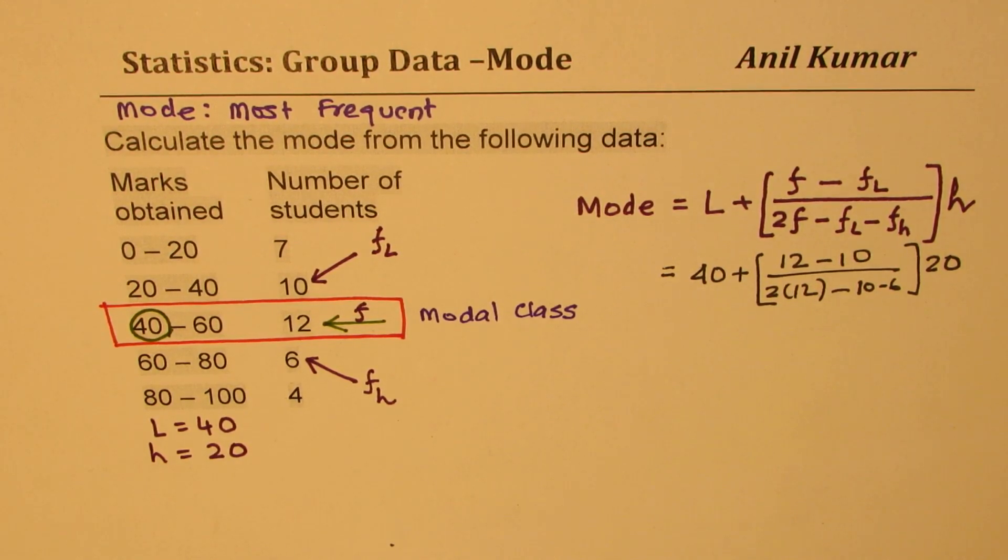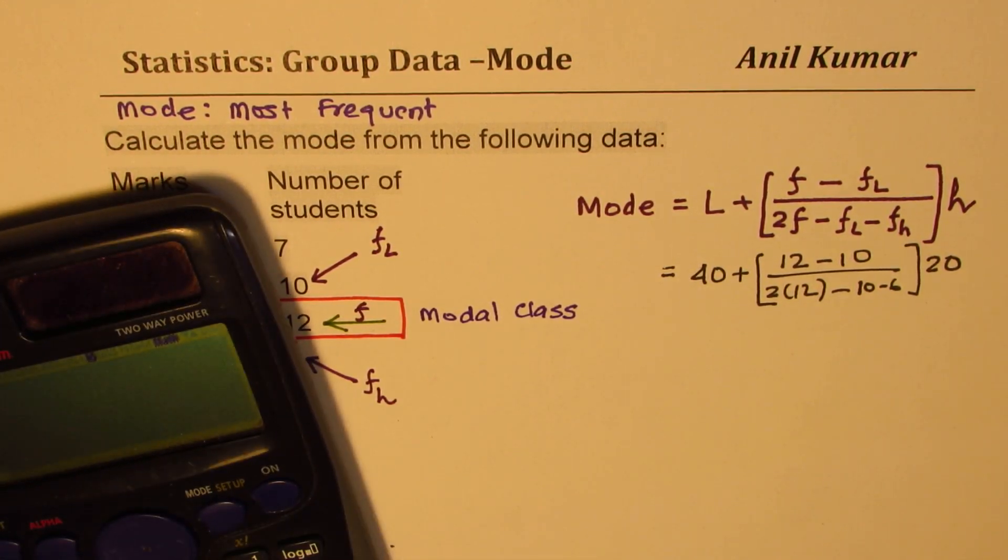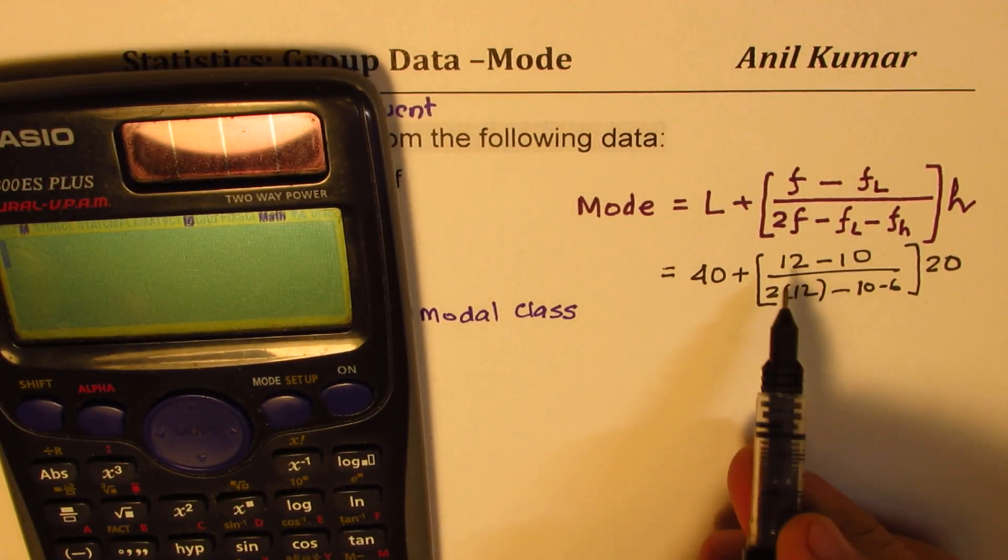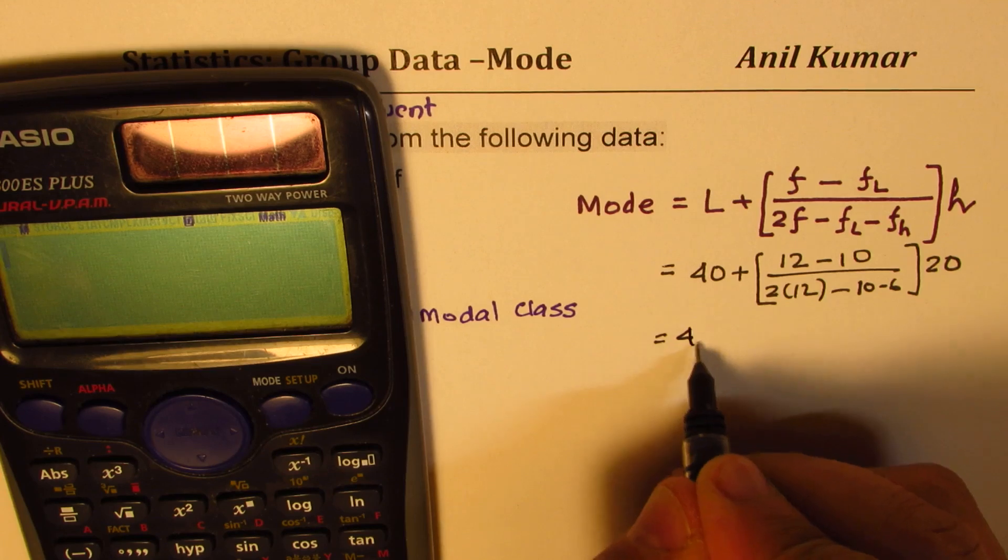Remember, this is a calculated mode. It may not really represent the correct situation. So let's work this out. So we have 40 plus, we have 12 minus 10 equals 2.